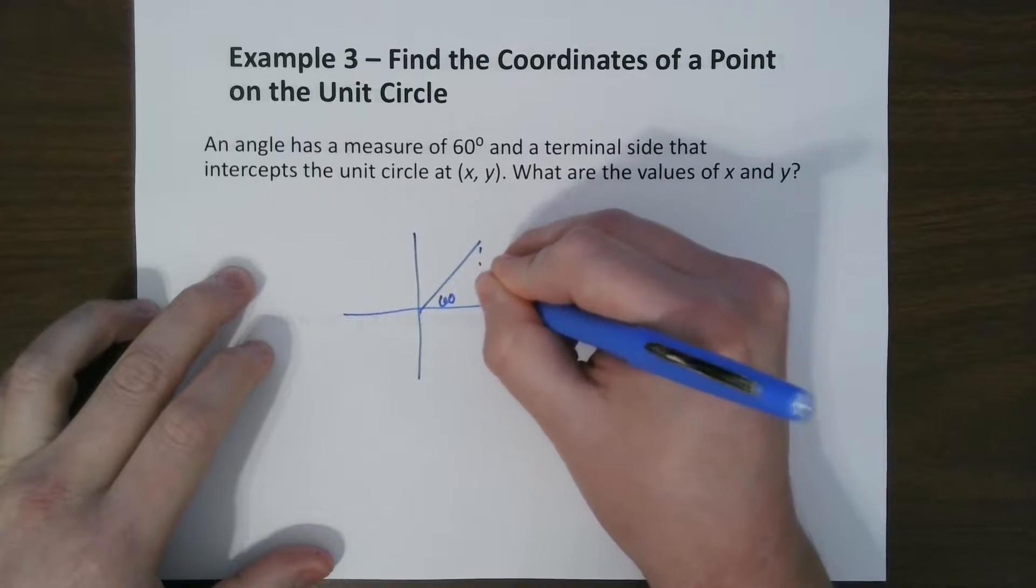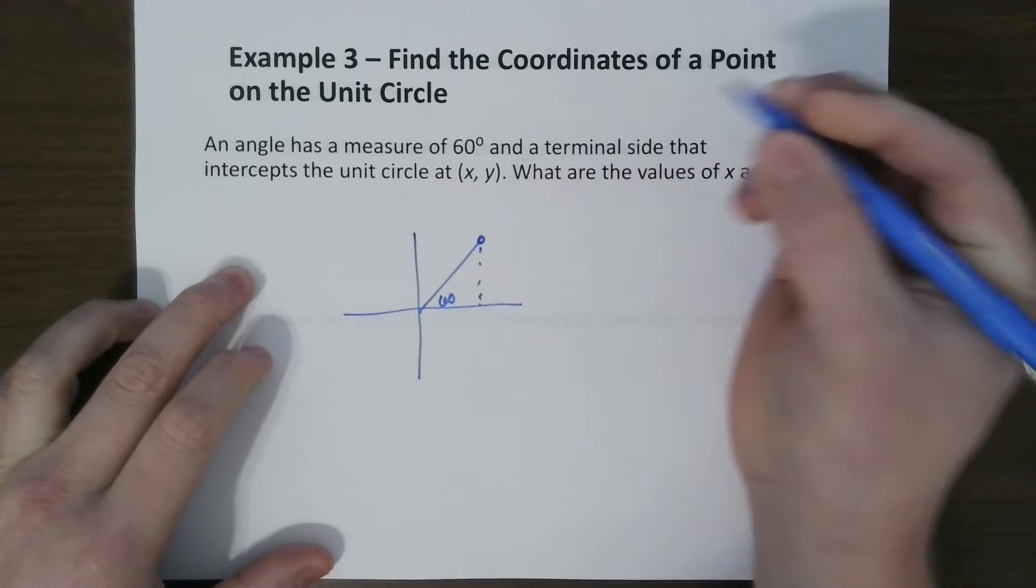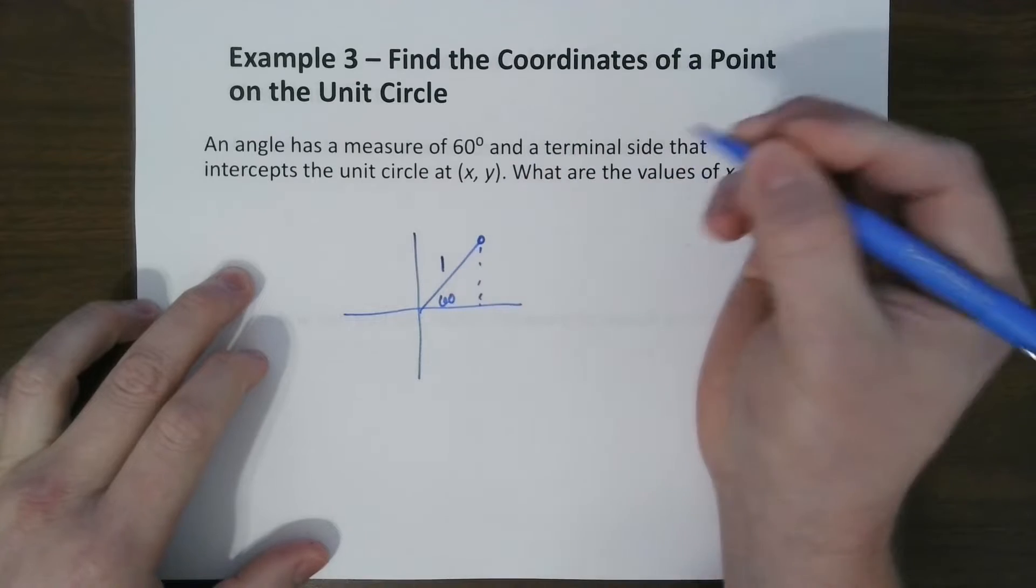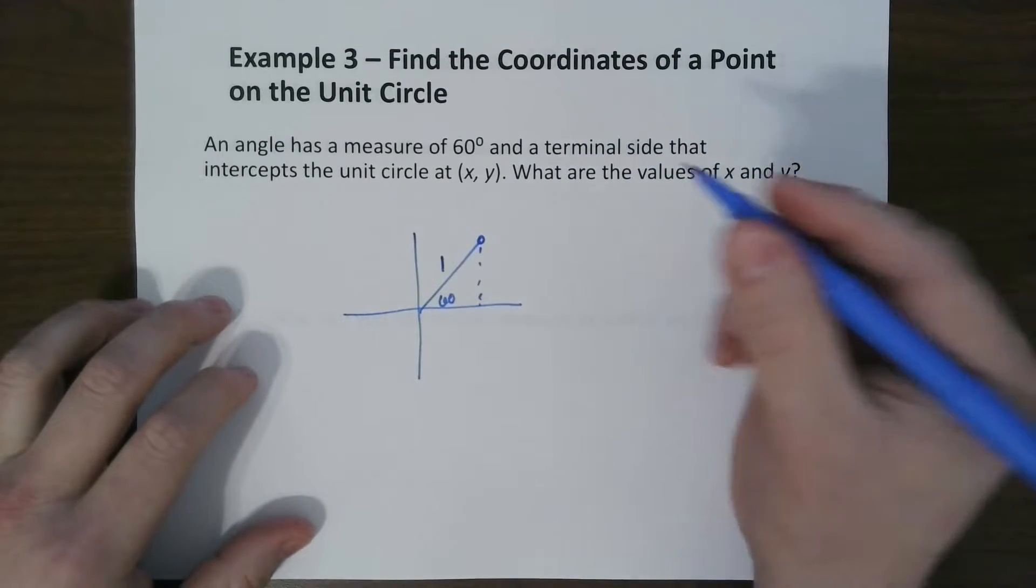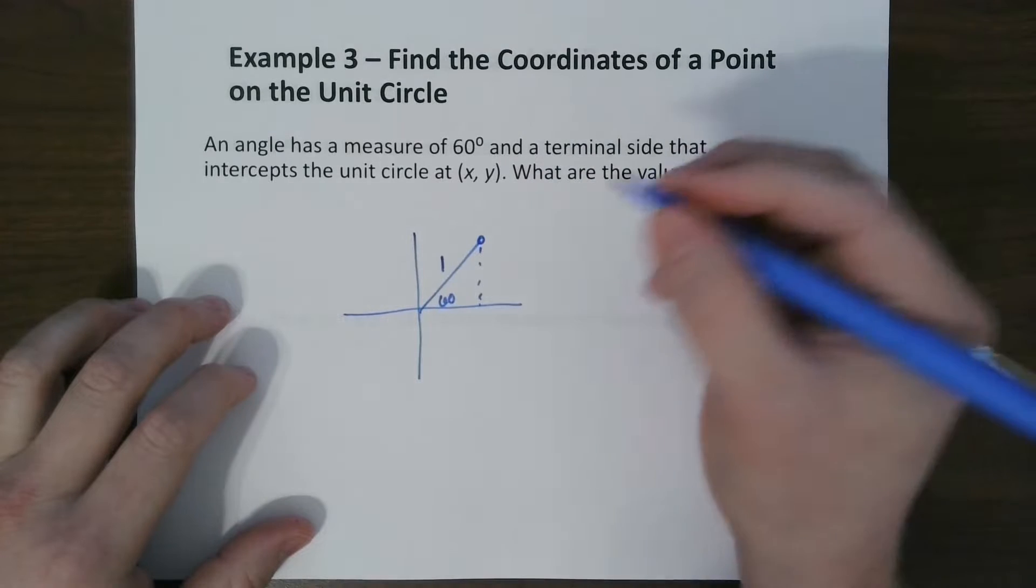So we know it's 60 degrees, so that's in this quadrant. We've got a point, x, y. We know this side's 1 because that's the radius of the unit circle. So we're trying to find x, y here.